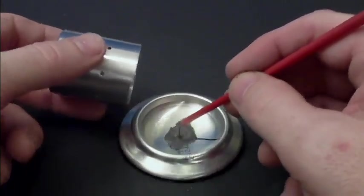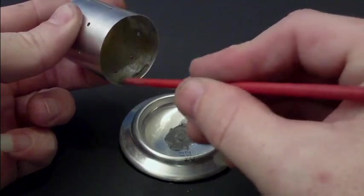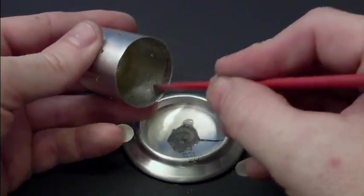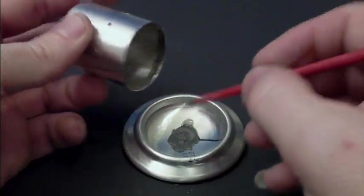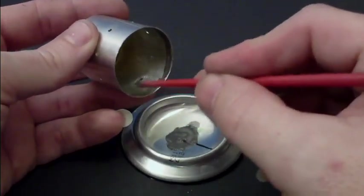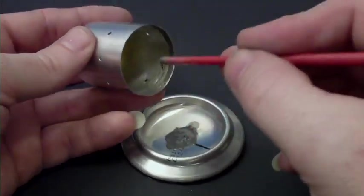Now that you have your JB Weld mixed up there, just go ahead and take a little bit of it and put a little dab of it all the way around the very top interior portion of the stove here. You're not going to want a lot of this on here. A little dab will do as they say.